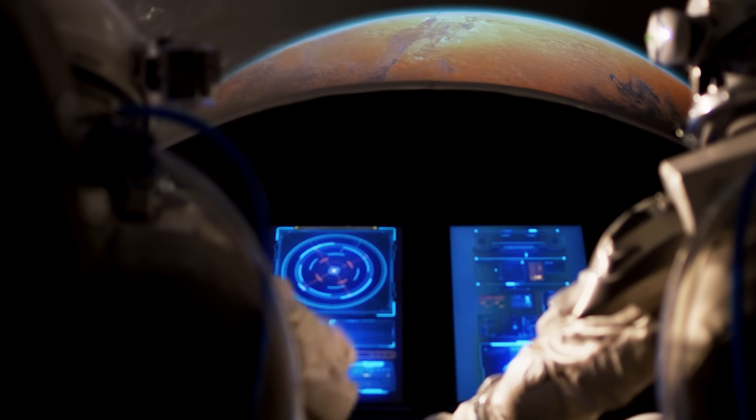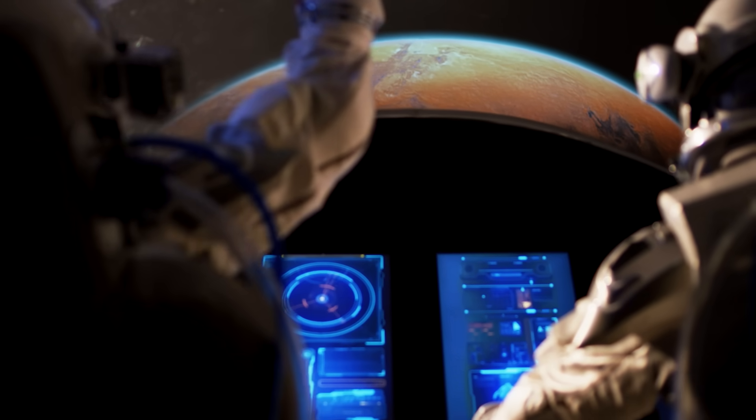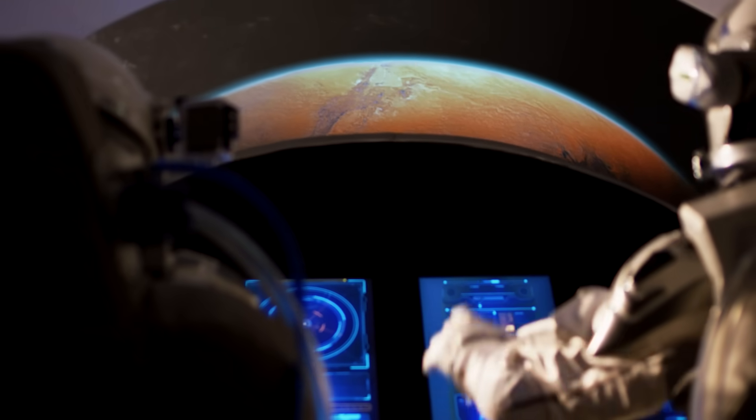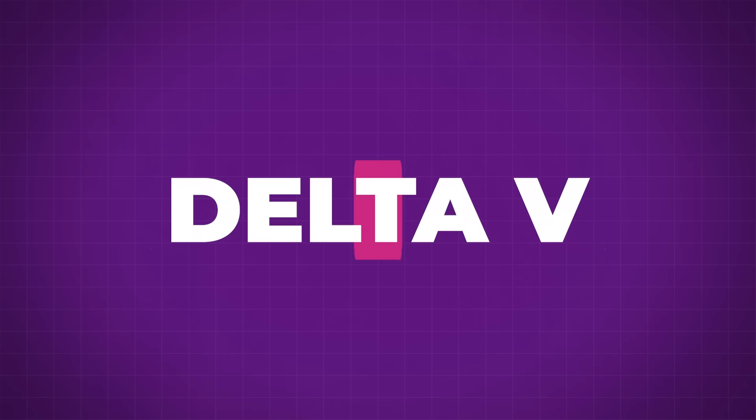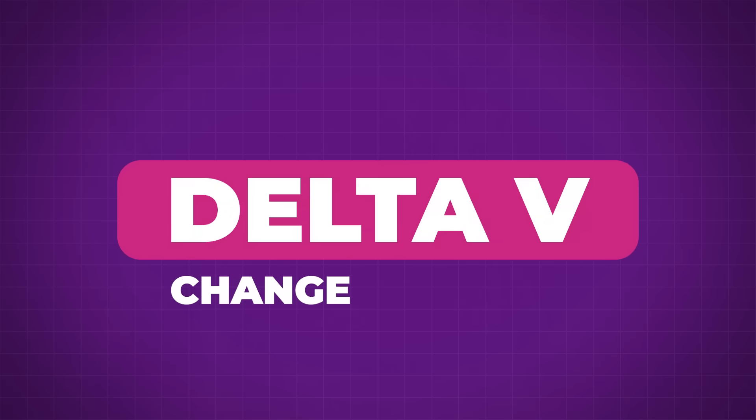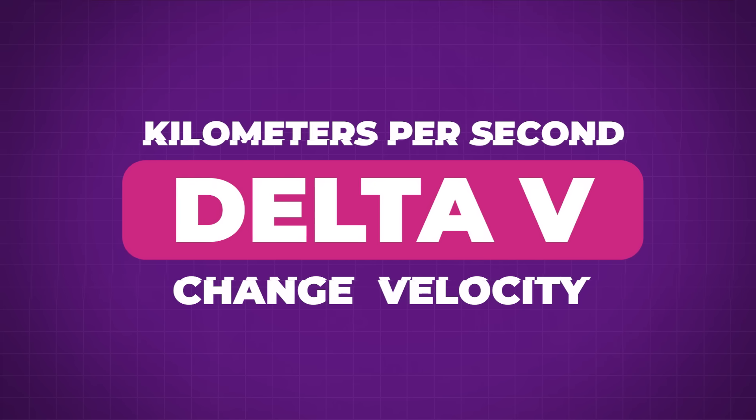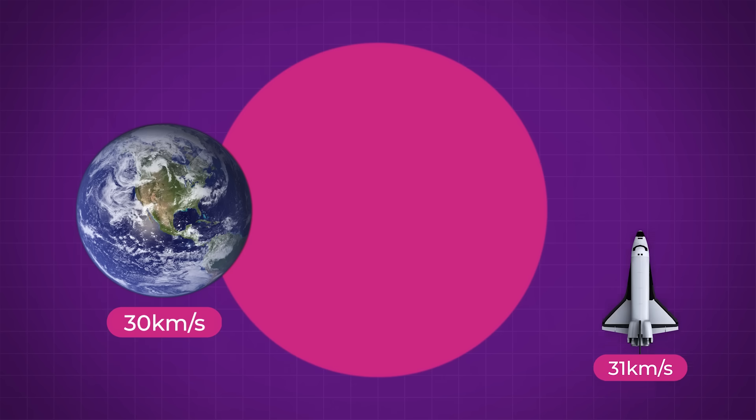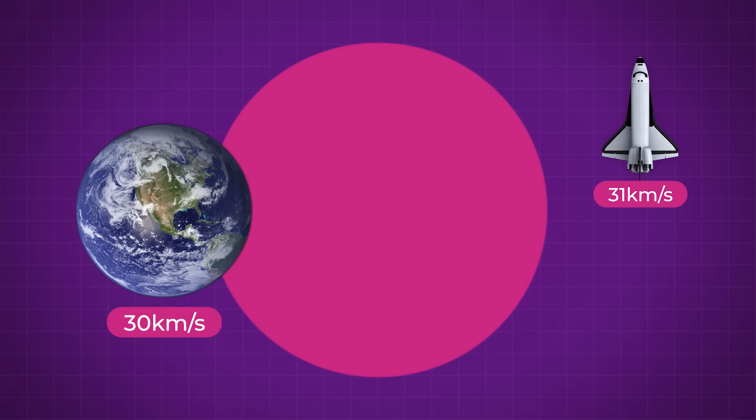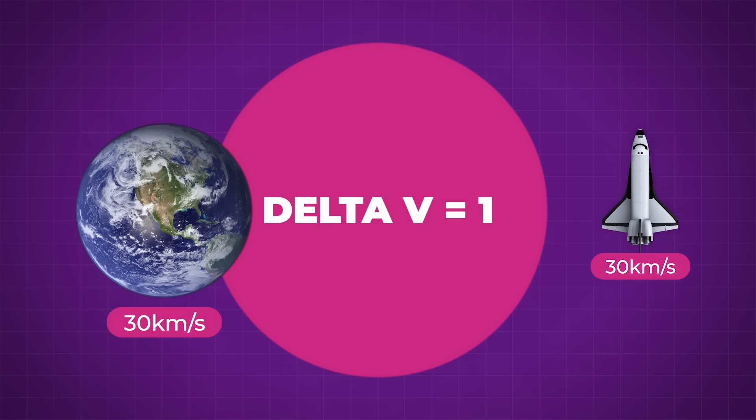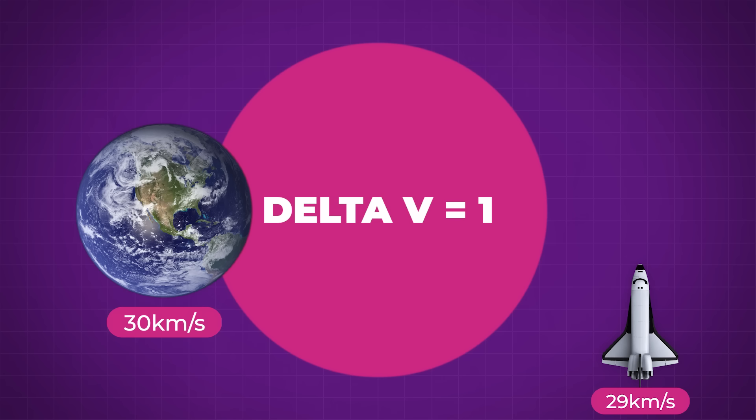So traveling through the solar system is all about changing your velocity relative to your starting point. The technical term that we use to describe this is delta V, where delta means change, and V means velocity. We typically measure delta V in kilometers per second. So if the Earth is moving at 30 kilometers per second and you accelerate your spaceship to 31 kilometers per second, you have a delta V of 1. By the same measure, if you decelerate your spaceship relative to the Earth and travel at 29 kilometers per second, you also have a delta V of 1.